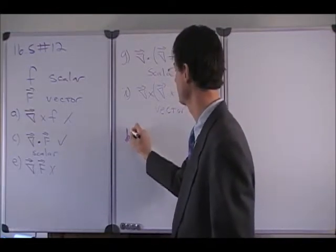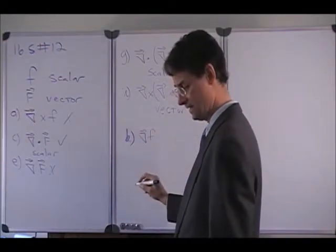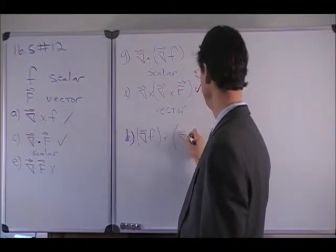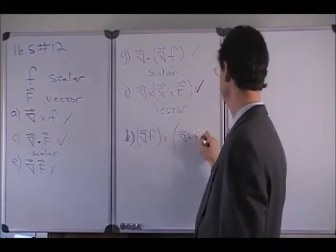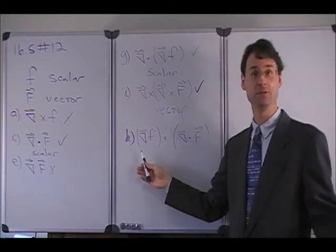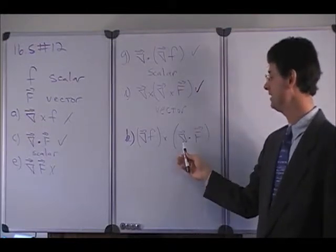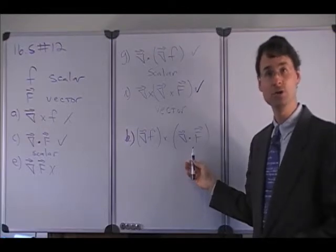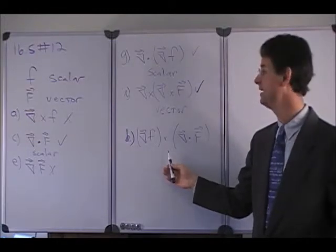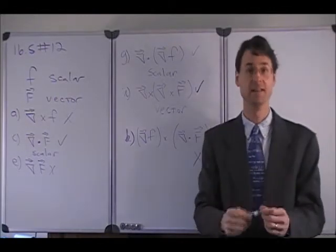Finally, can we take the gradient of a scalar field and cross that with the divergence of a vector field? Well, we can take the gradient of the scalar field — that yields a vector — and a vector works fine in a cross product, so this part is okay. But when you take the divergence of a vector field you get a scalar, and a scalar can't participate in a cross product, so the total expression is undefined.